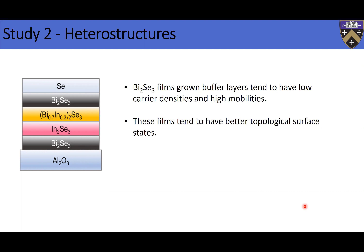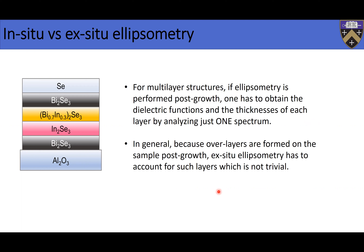The question for us is: how do we use in-situ ellipsometry when growing such a system? If you have the luxury of in-situ ellipsometry and take spectra after each growth cycle or after each layer, how can you use that to get information? Also consider: if this structure was sent to Kenyon ex-situ and I was asked to do ellipsometry, I can only take one spectrum. With one spectrum, I need to get information about all five layers — their dielectric functions plus their thicknesses. That is a very difficult problem.